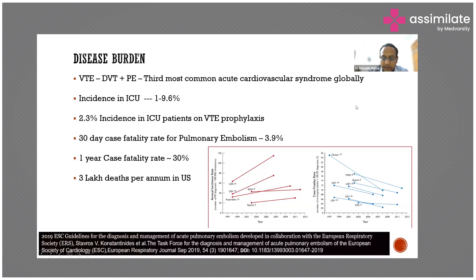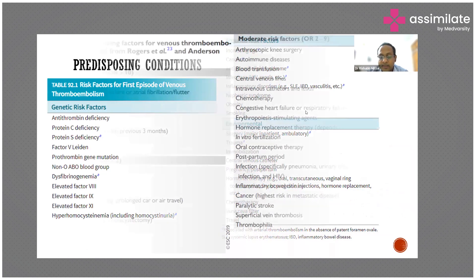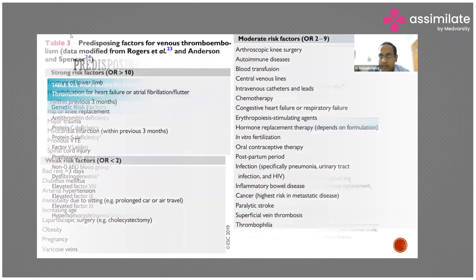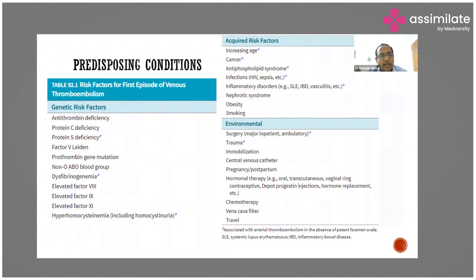What are the predisposing factors or conditions which make a patient vulnerable to pulmonary embolism? There are genetic risk factors, environmental risk factors, and acquired disease-related risk factors. The genetic risk factors include protein C deficiency, protein S deficiency, factor V Leiden, antithrombin deficiency — essentially deficiencies of all factors that inhibit thrombus formation — as well as elevated factor VIII, factor IX, or factor XI. There is also dysfibrinogenemia, hyperhomocysteinemia, and prothrombin gene mutation.